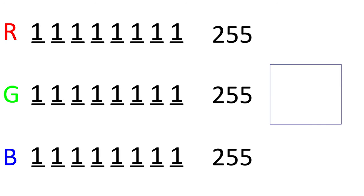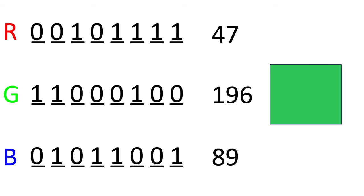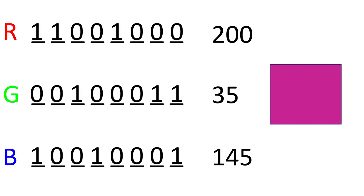Let's look at a couple of examples to hopefully make it a bit more clear. If we set all the bits to 0, we end up with a combination of 0, 0, and 0 for red, green, and blue. That's how the color black is represented — it actually means no color at all. If we inverse that and set all the bits to 1, we end up with 255, 255, and 255 for red, green, and blue — that means white. White is the existence of all colors. For a couple more random examples: red to 47, green to 196, and blue to 89 gives us sort of a darker green color. And red to 200, green to 35, and blue to 145 gives us sort of a light violet color.